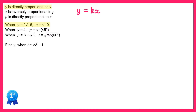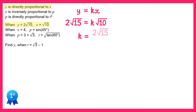In order to find k we'll substitute in the values we've been given, so let's replace the y with 2 root 15 and replace the x with root 10. We can find k by dividing both sides by root 10, so k would equal 2 root 15 divided by root 10.